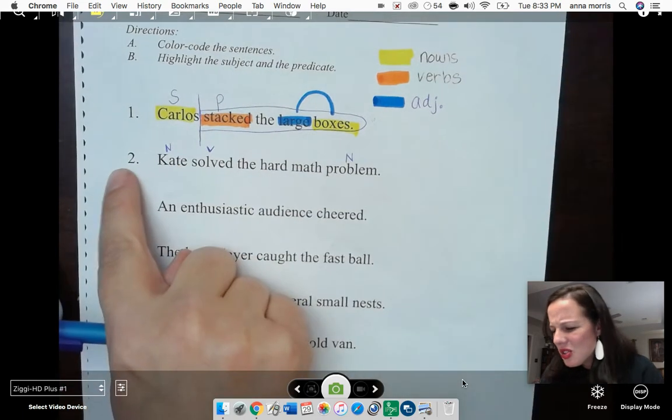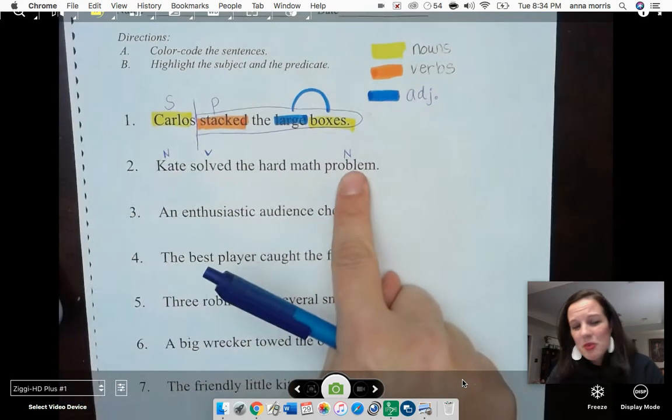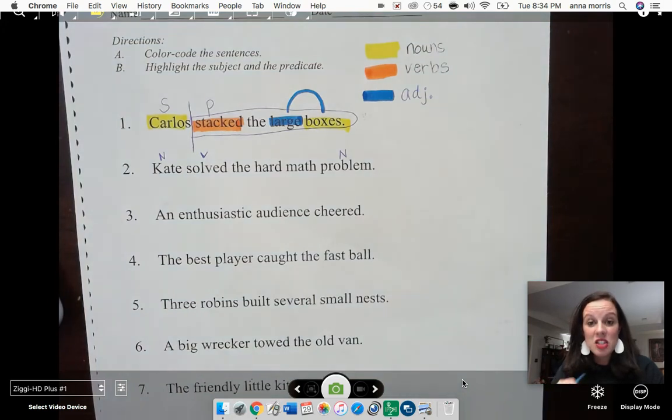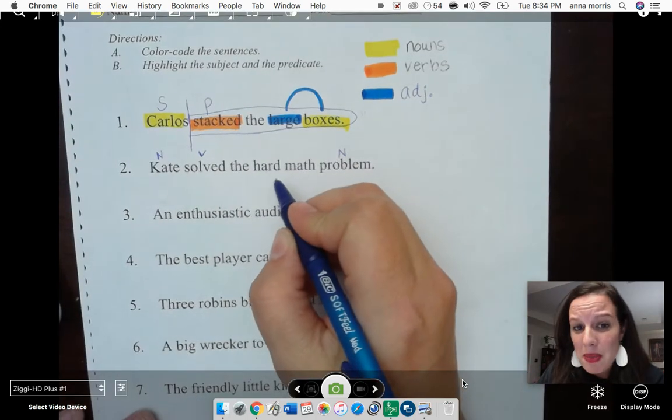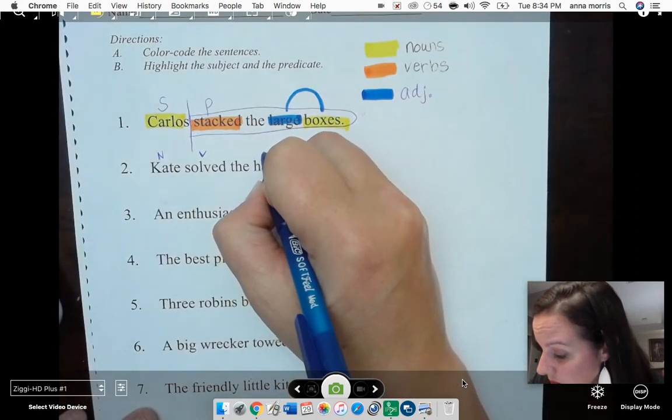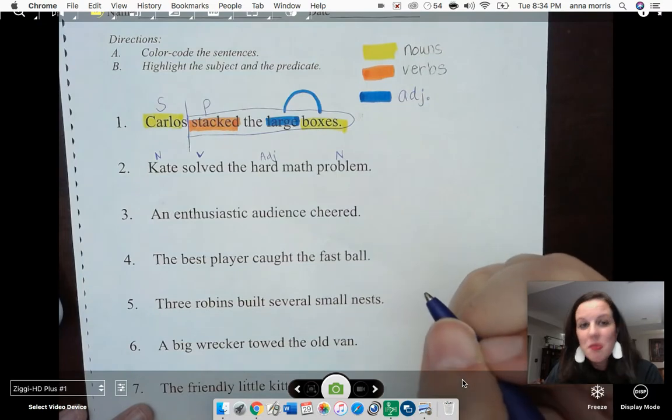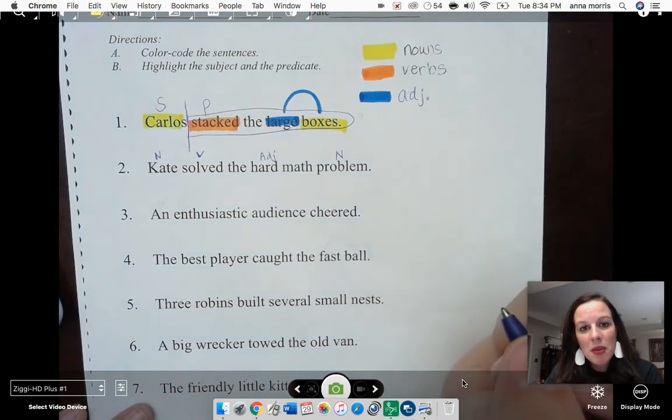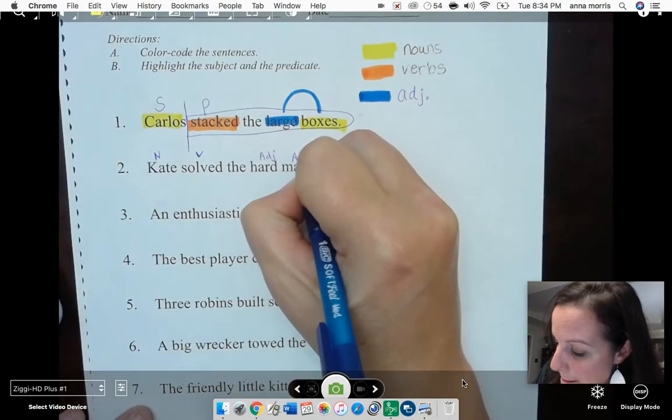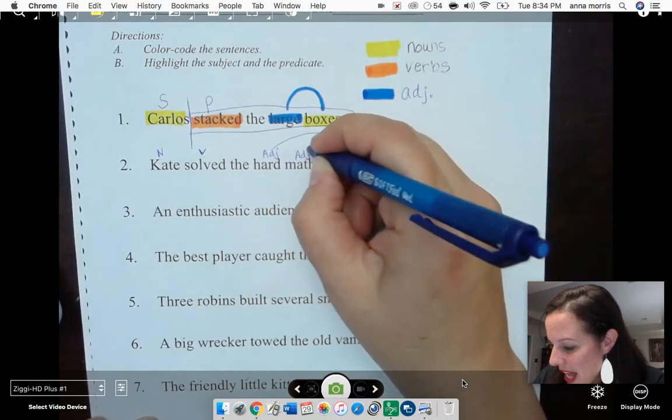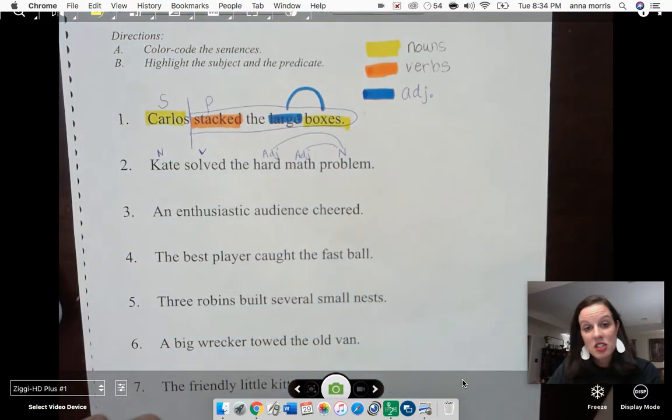Now, I have to see if there's any adjectives in the sentence. When I touch Kate, I see there's no words to describe her. So I touch my second noun, problem. I have two different adjectives that describe problem. First is that the problem is a hard problem. Hard tells me what kind of problem it is, but there's another word that tells me what kind of problem. It's a hard math problem. And I can still connect my adjectives with the noun that they describe.